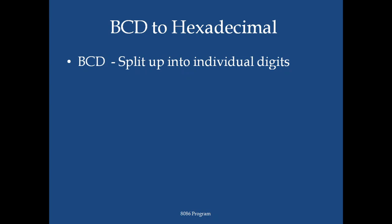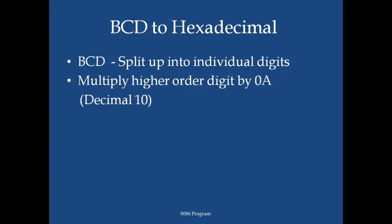BCD to hexadecimal: given a BCD number, split into individual digits — the 10th digit and the 1st digit. The 10th digit is multiplied by 0A hexadecimal value, which gives the hexadecimal equivalent for the upper digit. Then the lower order digit (1st digit) is added, and we will get the final hexadecimal digit.